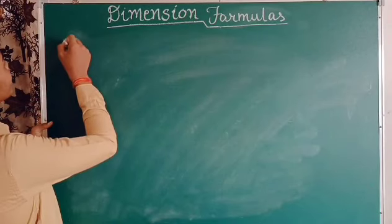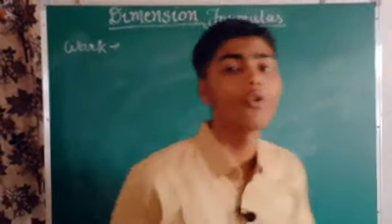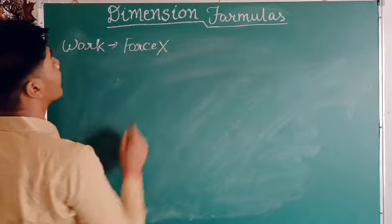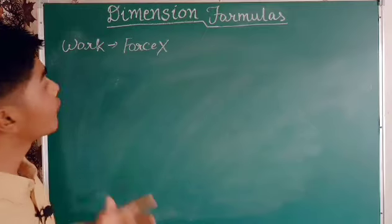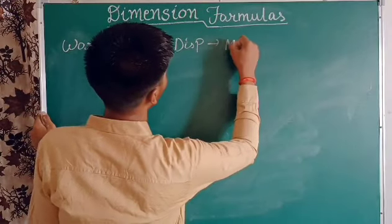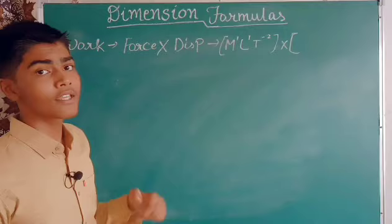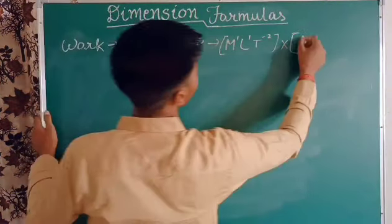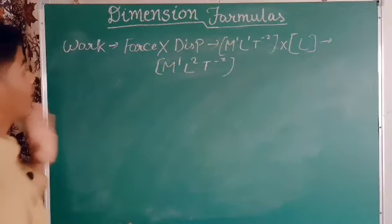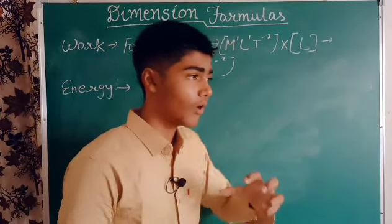Now there is also work. Work is force times displacement. Force has dimensional formula M¹L¹T⁻², and displacement is a distance, which means length L. Multiplying them: M¹ × L¹ × T⁻² × L¹ gives us [M¹L²T⁻²] as the dimensional formula for work.